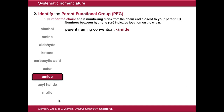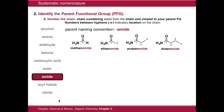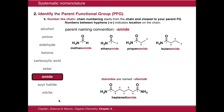Amides are ended with -amide as a suffix, so we have methanamide, ethanamide, propanamide, butanamide. Diamides are called -diamide, so heptanediamide. Again no need to mention the numbering because they will always terminate a chain.